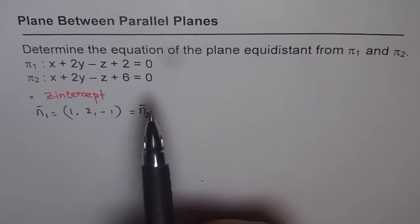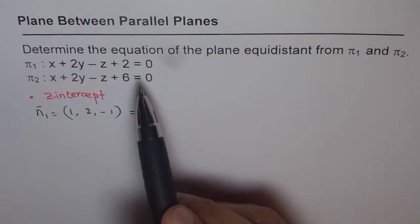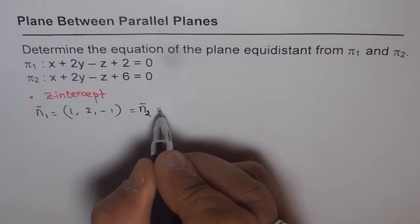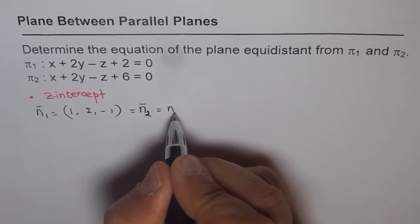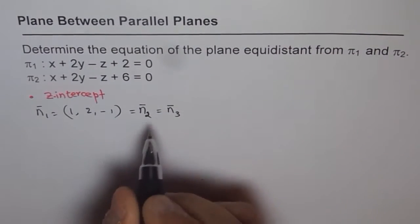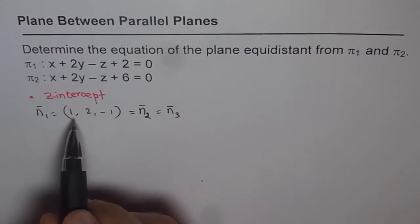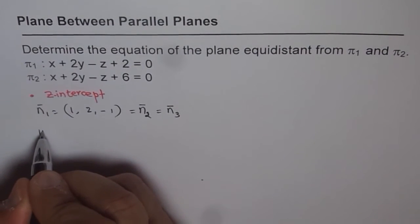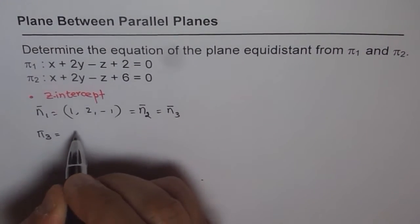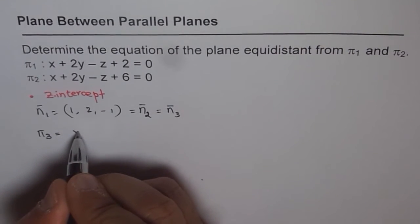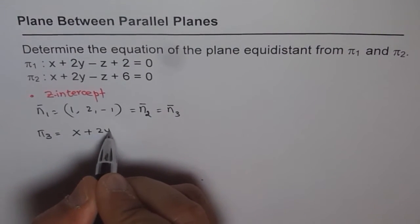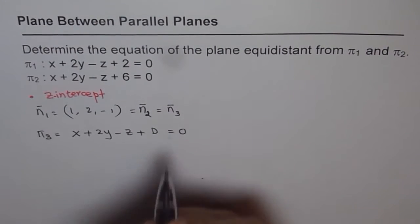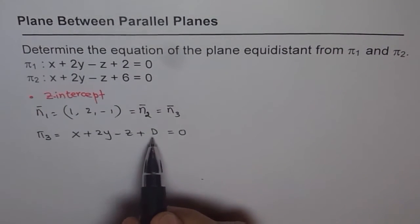Now, the question is, the plane which is parallel to these will also have the same normal. So that means the plane, let's say π3, will have the same normal. So we know what the normal should be, which is (1, 2, -1). So with that, we can always write π3 as x + 2y - z + d = 0. Now, the question is, how will you find d?